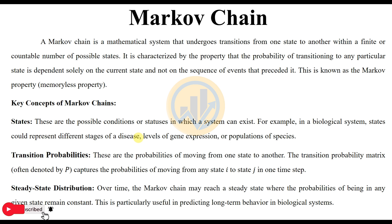We are discussing the topic Markov chain. So what is the Markov chain? The Markov chain is a mathematical system that undergoes transitions from one state to another within a finite or countable number of possible states. It is characterized by the property that the probability of transitioning to any particular state is dependent solely on the current state and not on the sequence of events that preceded it. This is known as the Markov chain memoryless property.